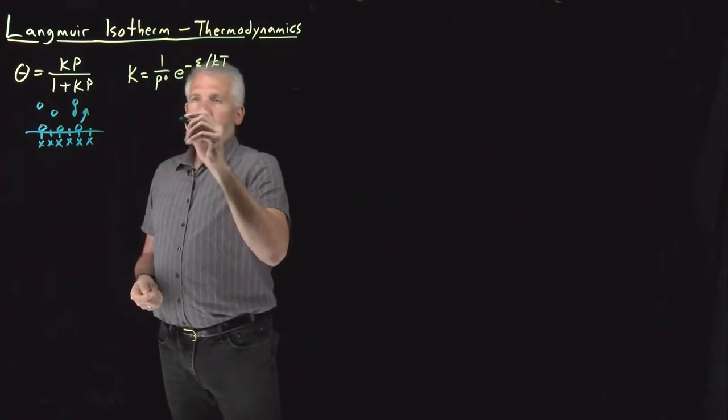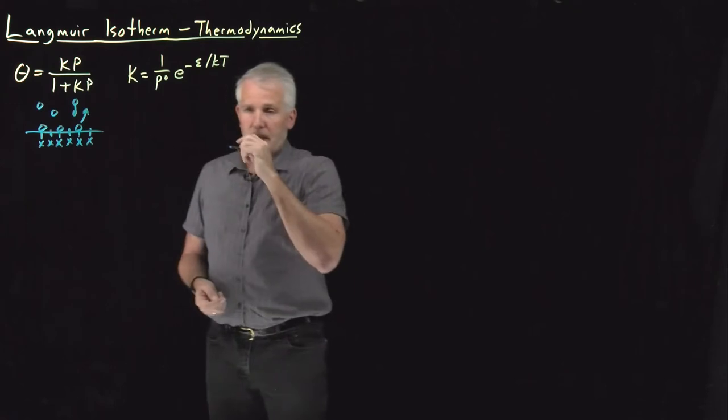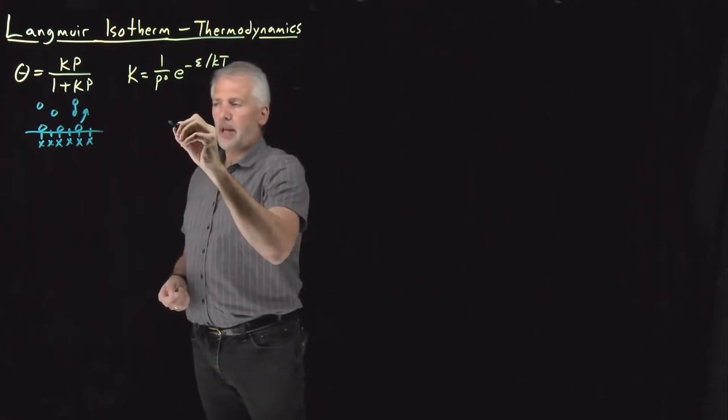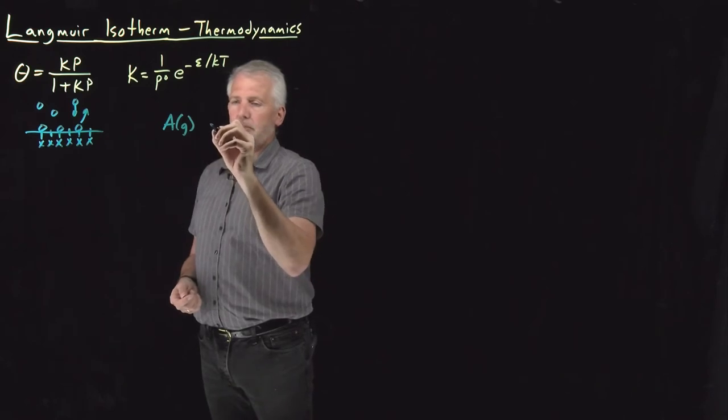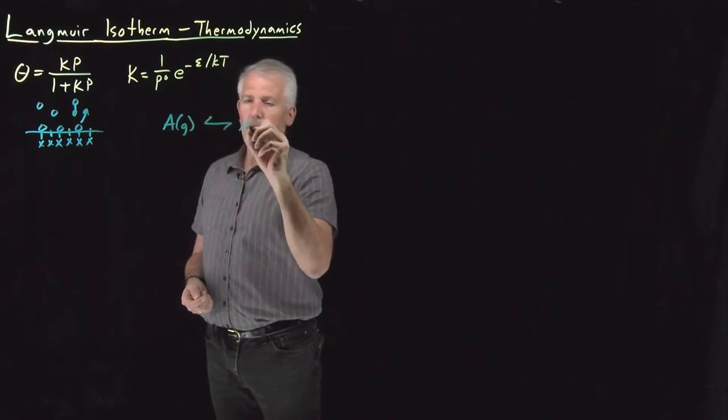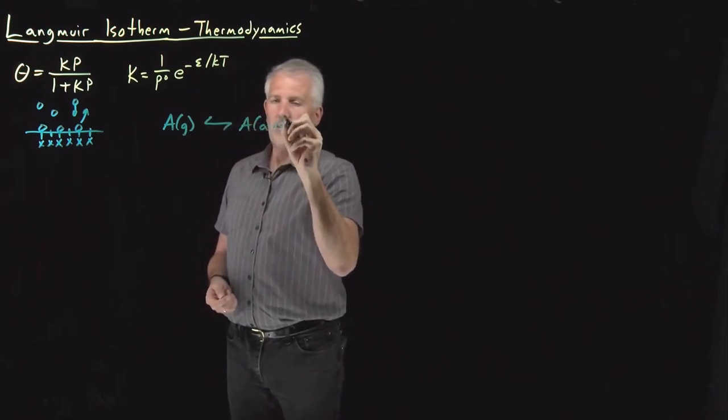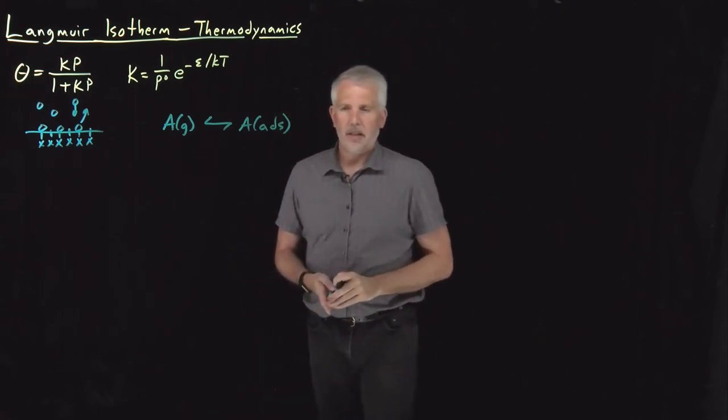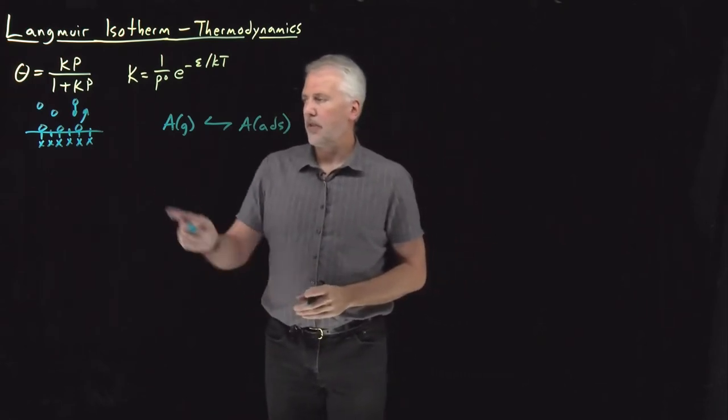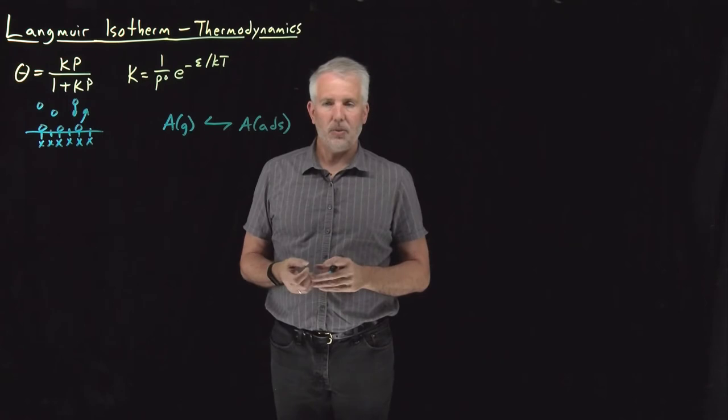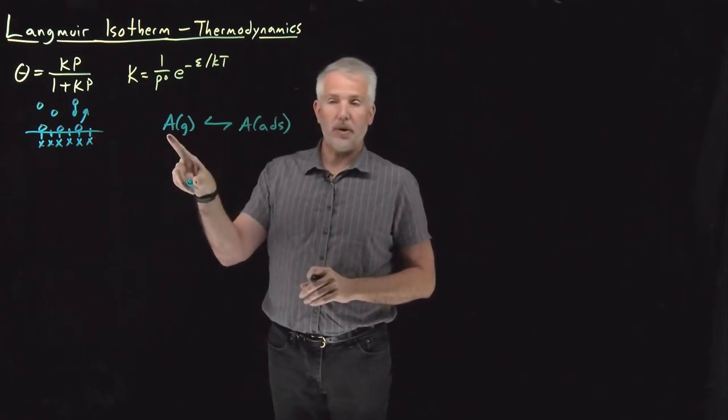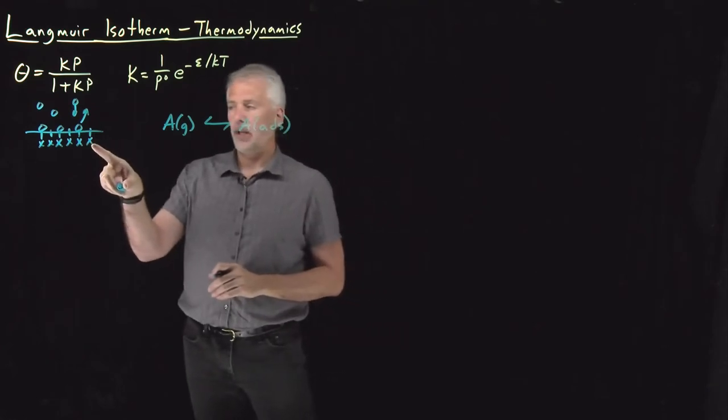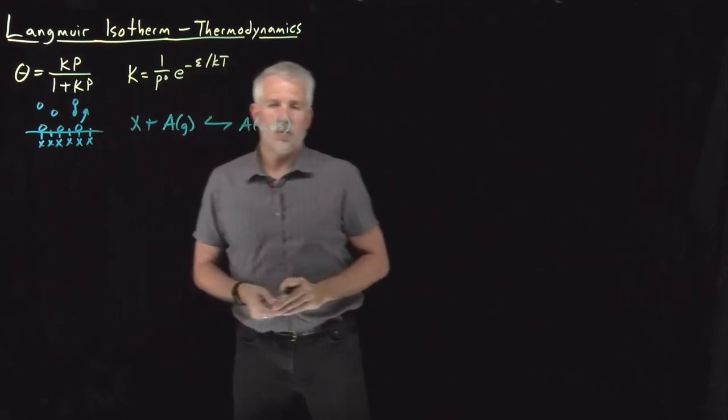If we think about doing an equilibrium thermodynamic reaction, the chemical reaction that we're talking about is gas phase species in equilibrium with adsorbed species. If we want to think about it in terms of the two reactants that need to encounter each other and form a bond in order to create an adsorbed species, it doesn't require just a gas phase molecule. It requires one of these surface sites as well.